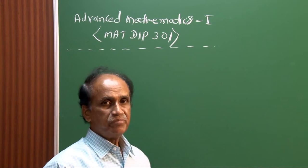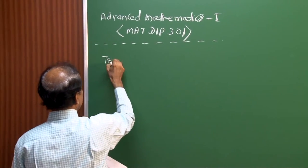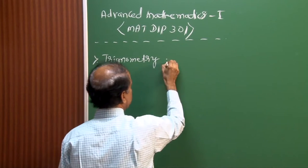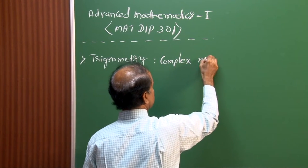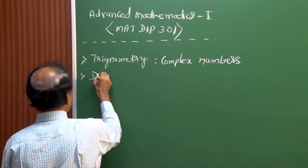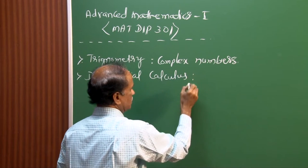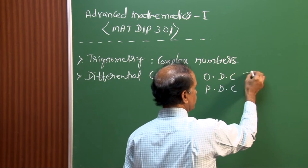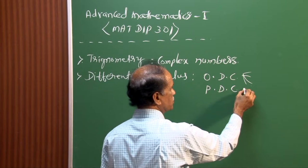The subject code is Math Dip 301 and it has four important modules. The first module is Trigonometry, covering complex numbers. The second is Differential Calculus, covering ordinary differential calculus — with four topics — and partial differential calculus, with three topics.